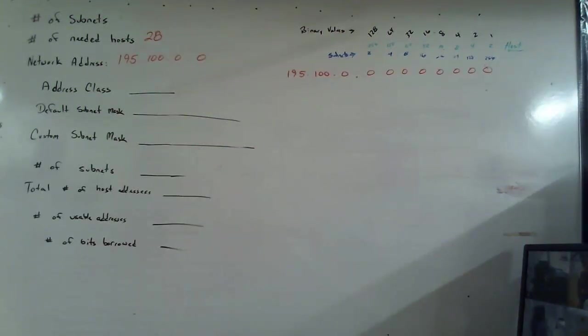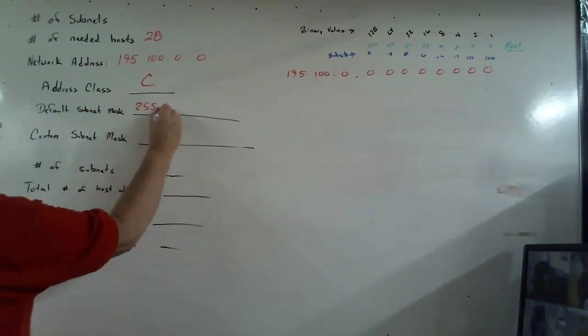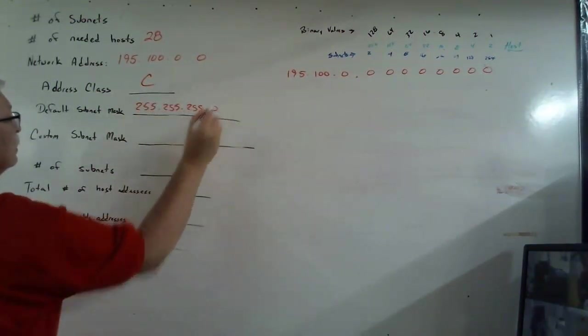All righty. Through the magic of computers, I have reset our board. I have a new network address of 195.100.0.0. And this time, I'm only looking for one thing. And that happens to be when I'm finished, each of my subnets needs to have at least 28 usable host addresses because I'm going to have 28 machines in each subnet. So the very first thing I'm going to do, as I usually do, is ask what the address class is. And of course, 195, the very first number, falls within the range of the C class.